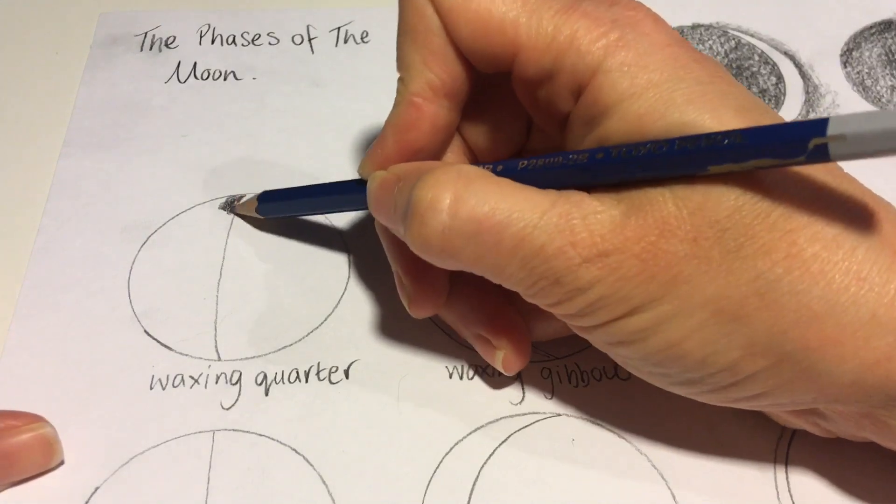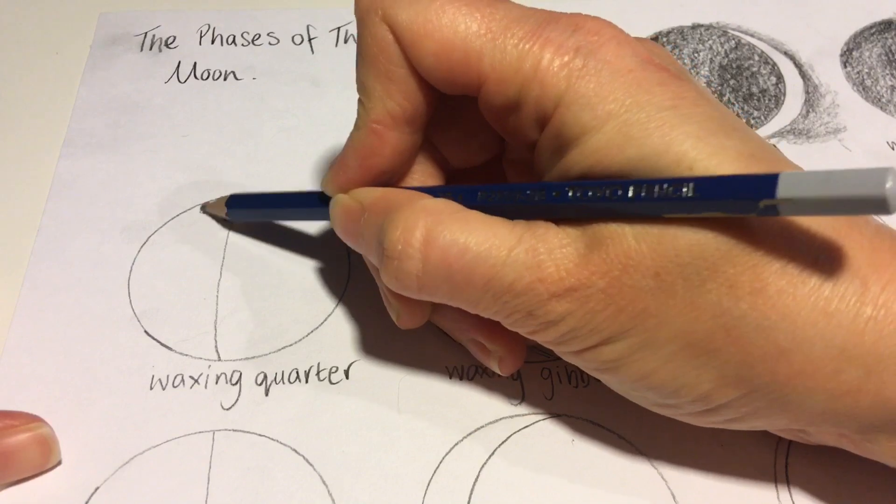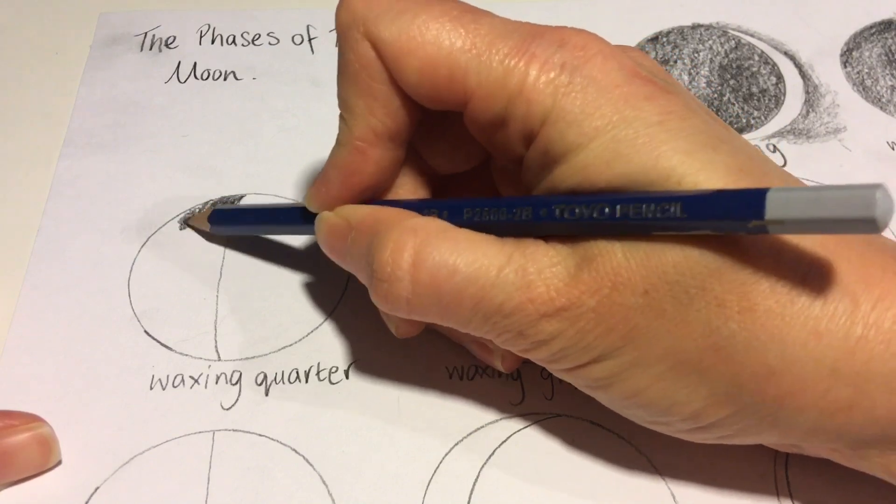Now we're onto the waxing quarter, and we're going to shade in almost half of the moon on the left hand side.